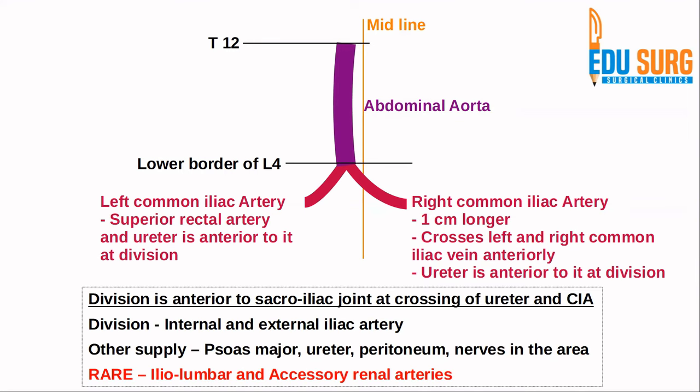The major division of the common iliac artery is into the internal and external iliac arteries, as most of you know. Other blood supply from this vessel includes branches to the psoas major muscle and some peritoneal branches supplying the ureter and surrounding tissue. A rare variant is the iliolumbar artery and accessory renal arteries arising from the common iliac artery.